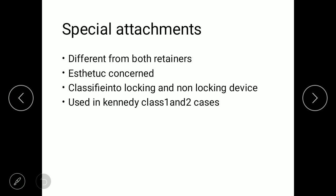In summary, extracoronal direct retainers are divided into cast circumferential clasp, bar clasp, and combination clasp. Intracoronal direct retainers include internal attachment, external attachment, stud attachment, bar attachment, and special attachments. These are the direct retainers involved in removable partial dentures. Thank you for watching.